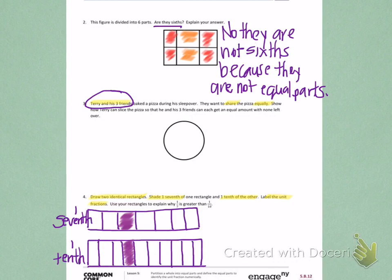Last, I am being asked to use the rectangles to explain why 1/7th is larger than 1/10th. Use these two pictures and look at the part that was shaded carefully. Discuss with your parents or whoever you're watching the video with why 1/7th is bigger than 1/10th. Then explain in words on your paper why 1/7th is greater than 1/10th.